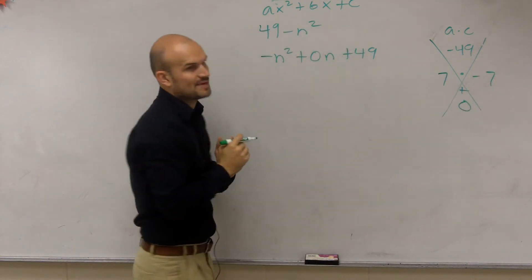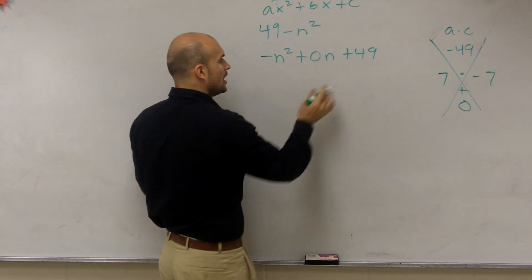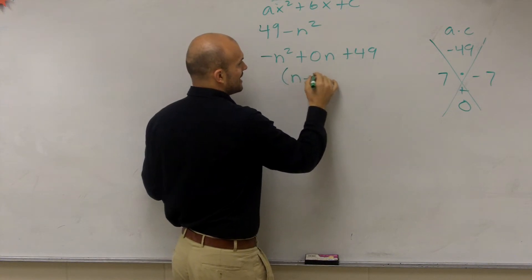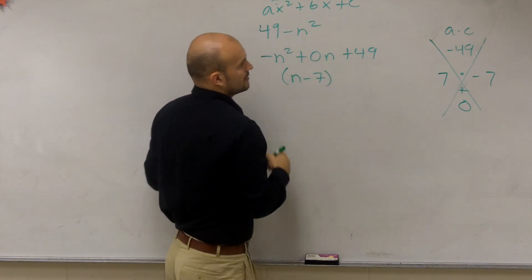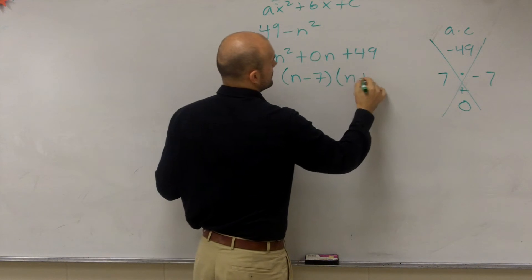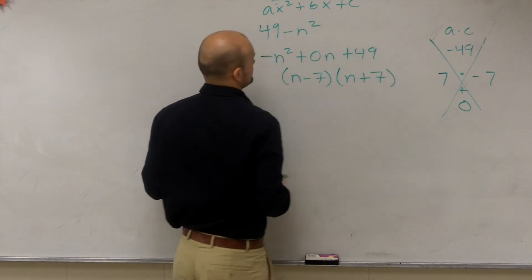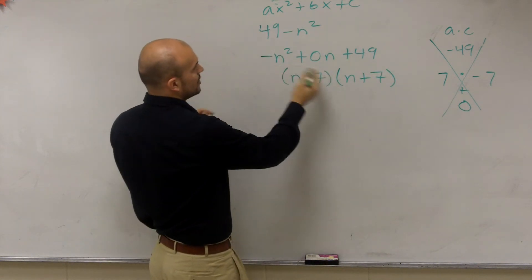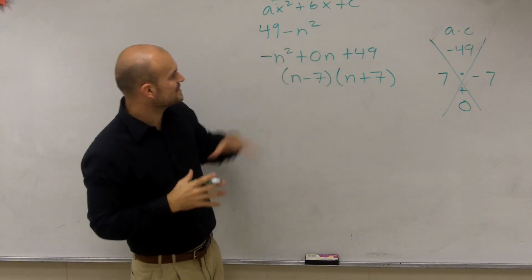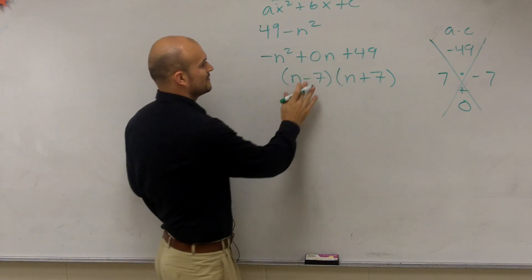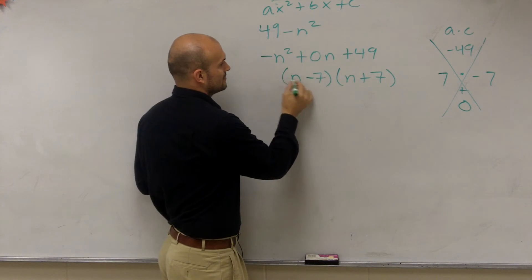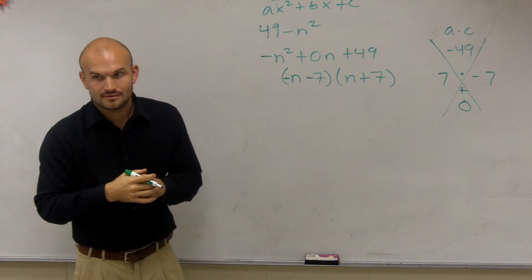7 and negative 7. So to write this as a product of two factors, we can say it's going to be n minus 7, and then n plus 7. I'm sorry. Well, okay. So therefore, you guys can write it in there, but you look at that. That's not going to give you a form, so you can negate that to write that.